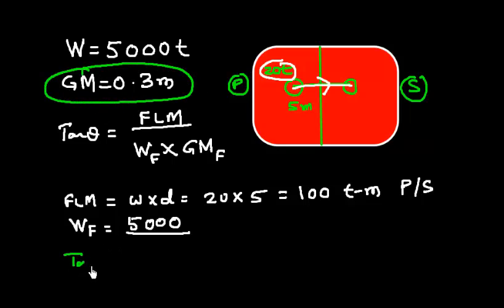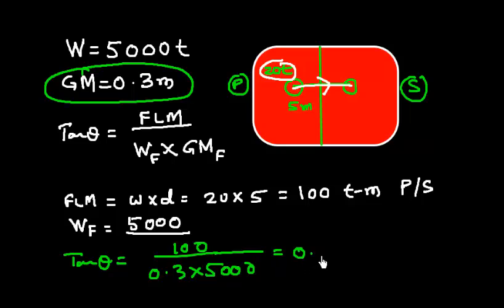So let's put these values here. Tan theta equals list moment, which is 100 divided by 0.3 into 5000. Now I need to solve this using the calculator. 100 divided by 0.3 multiplied by 5000 equals 0.06666666. So I just need to use tan inverse function.